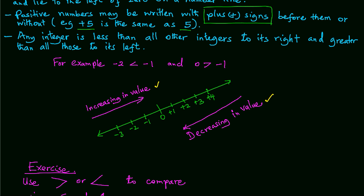For instance, negative 2 is less than negative 1, and 0 is greater than negative 1.